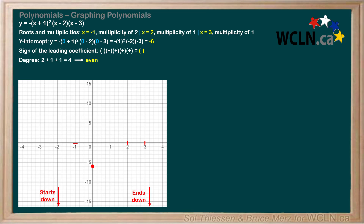With that we have all the information we need to begin sketching. Basically, now we're playing connect the dots with all the information we've marked on the grid. Moving from left to right, we'll start by joining the end behavior arrow and the mark at x equals negative 1. Remember, the graph won't cross the x-axis here because this root has an even multiplicity. Next, we'll join the mark at x equals negative 1 with the dot representing the y-intercept. Because polynomial curves are smooth without sharp corners, we'll continue the graph downwards before turning it around smoothly to come to the root at x equals 2.